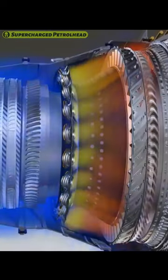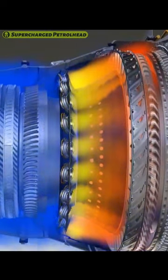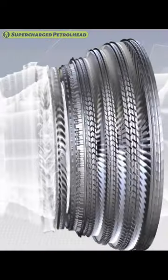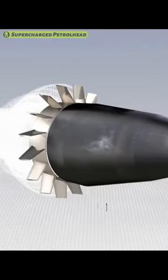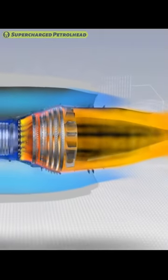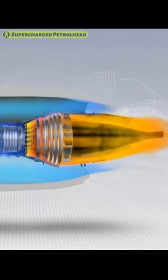The combustion chamber: this is where the compressed air is mixed with fuel and ignited, creating hot gases. The turbine: the hot gases flow through the turbine, which consists of blades that generate energy. The nozzle: the hot gases from the turbine flow through the nozzle, creating a jet of exhaust that produces thrust.